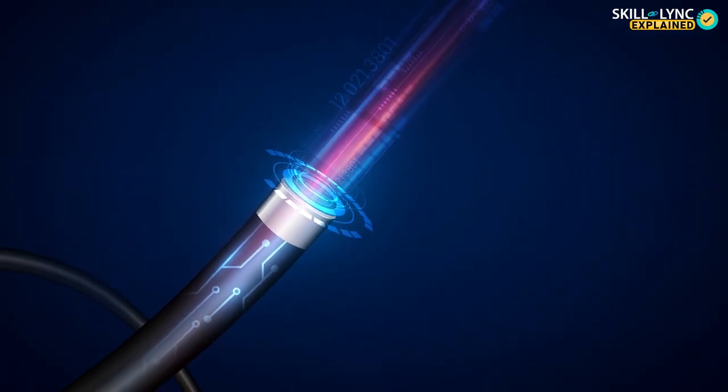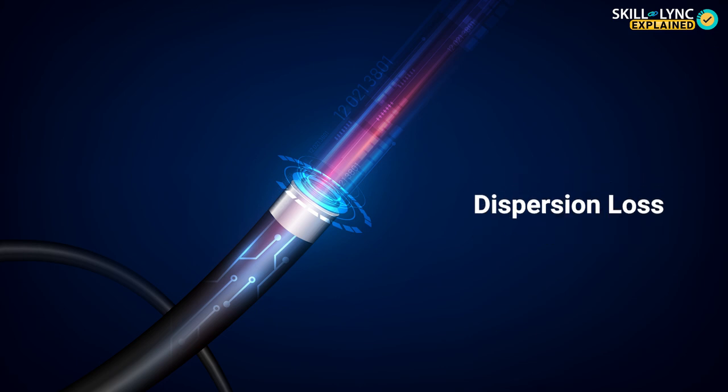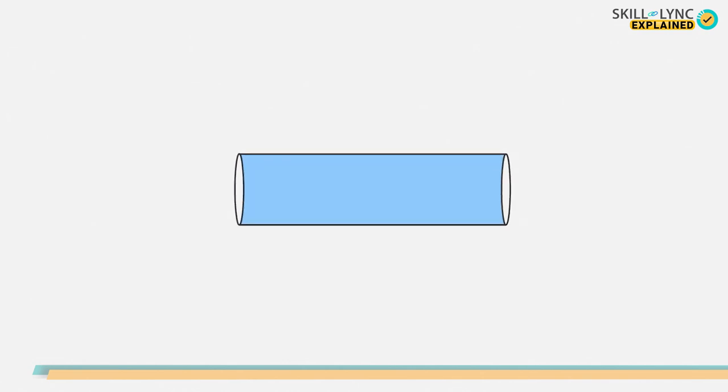The remaining three types of losses in optical fibers are dispersion losses, bending losses, and coupling losses. Let's start with dispersion loss. This loss occurs as the wave travels through the optical fiber.